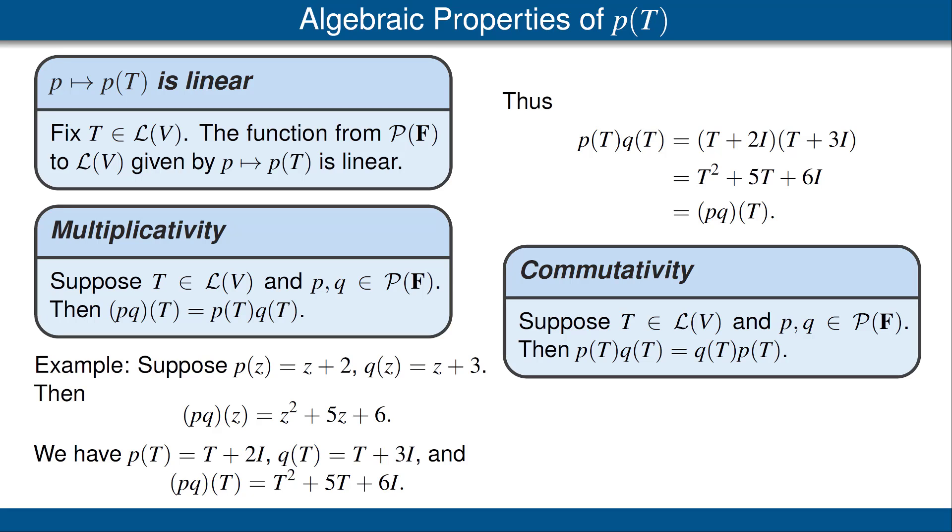We now have this corollary of the previous result. This corollary states that any two polynomials of T commute with each other. In general, multiplication on L of V is not commutative. Thus, it's often useful to know that in this particular case we do have commutativity. Let's look at the easy proof for this result. We have from the previous result that p of T times q of T equals the polynomial pq applied to T. However, the usual multiplication of polynomials is commutative, so this equals qp applied to T. Now apply the previous result once again, this time to q times p, concluding that qp of T equals q of T times p of T. This completes the proof of this corollary.